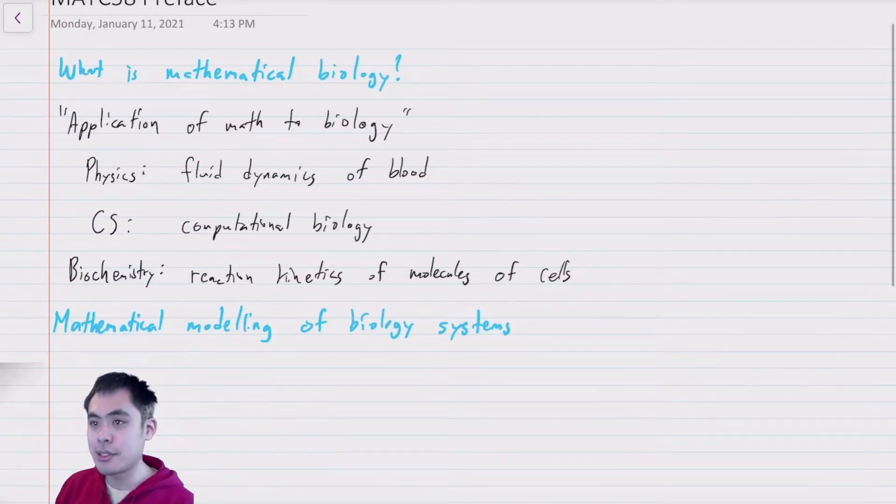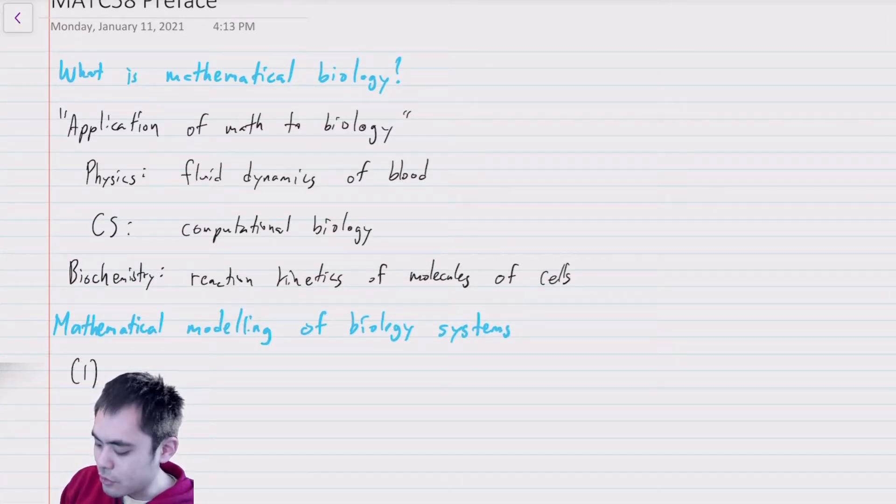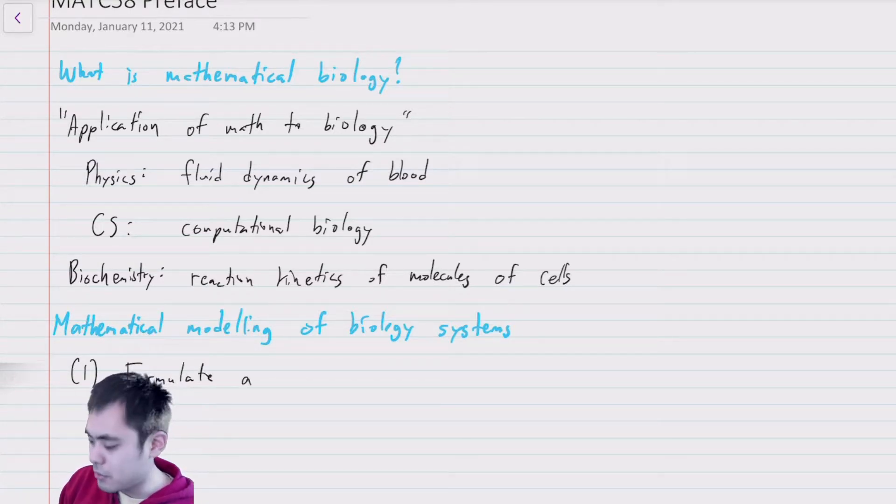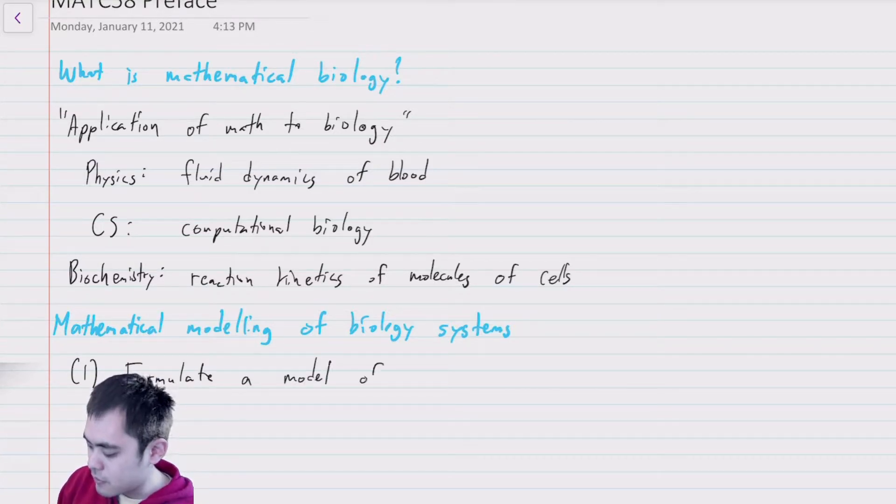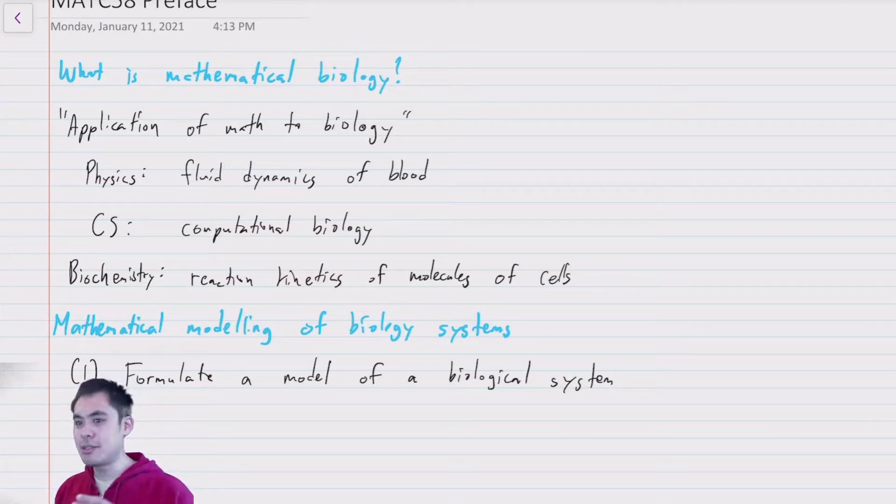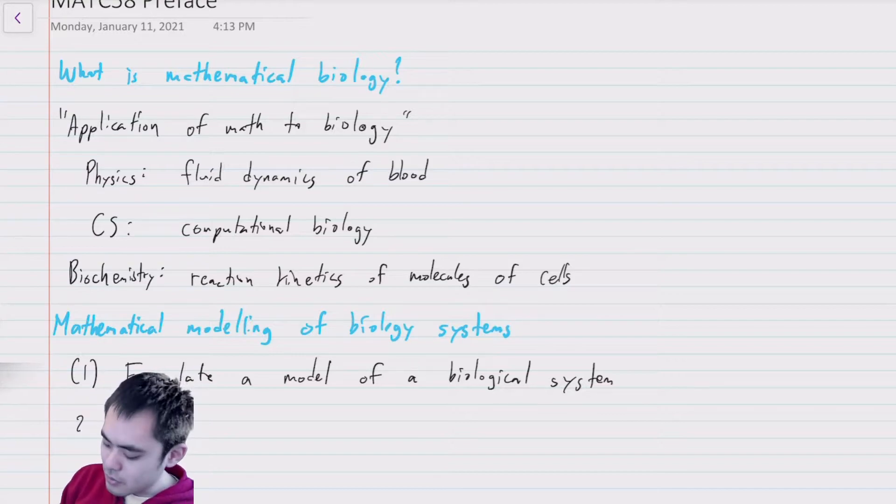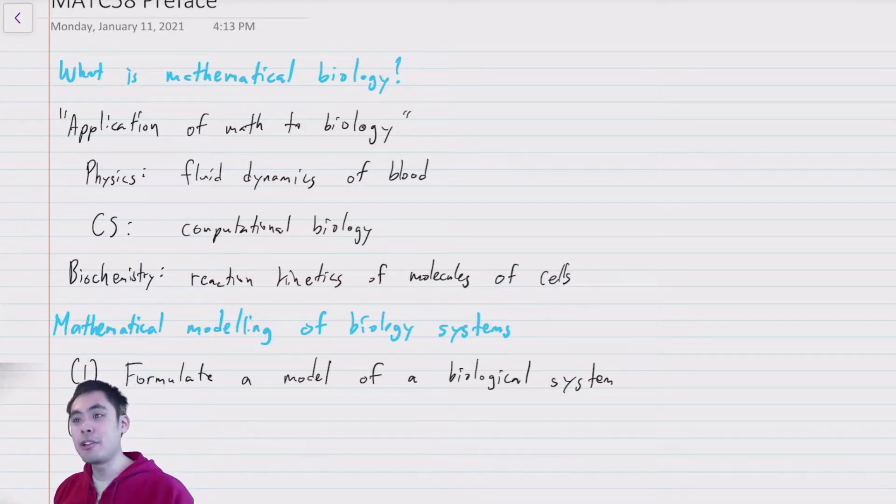And this is a multi-step process. So first, you might want to formulate a model of a biological system. It's important to remember that the model isn't the system itself. So all models are wrong, some of them are useful.